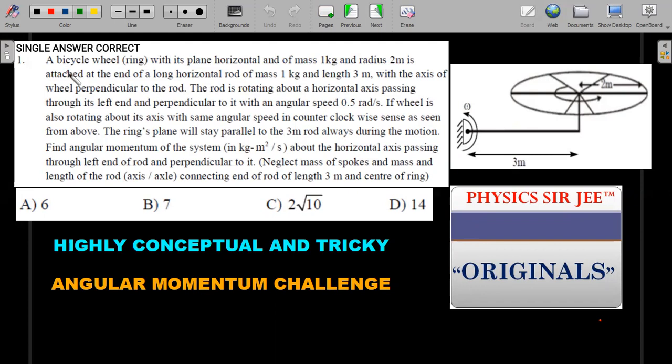A bicycle wheel, considered to be a ring with its plane horizontal and of mass 1 kg and radius 2 meters, is attached at the end of a long horizontal rod of mass 1 kg and length 3 meters with the axis of wheel perpendicular to the rod. The rod is rotating about a horizontal axis passing through its left end and perpendicular to it with an angular speed of 0.5 radians per second.